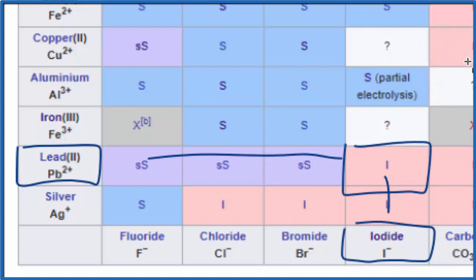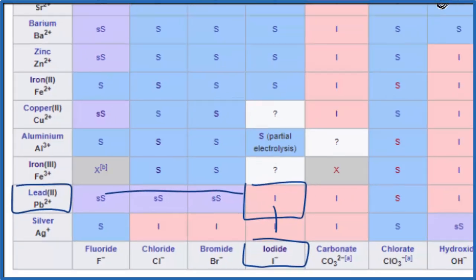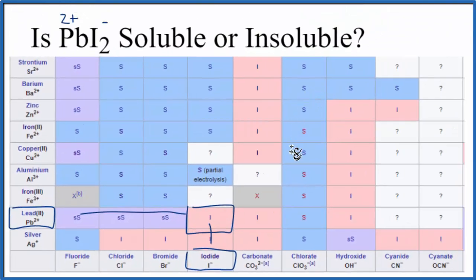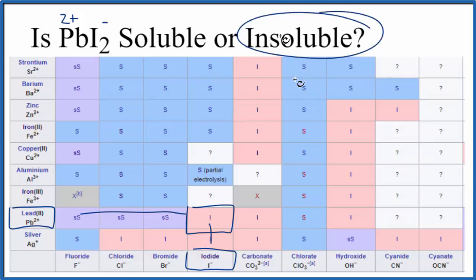So both the solubility rules and the solubility chart tell us that PbI₂ will be insoluble in water. There's one more way we could do this — we could take some lead-2-iodide, put it in water, and see what happens. According to the rules and the chart, we would expect it to be insoluble. This is Dr. B, and thanks for watching.